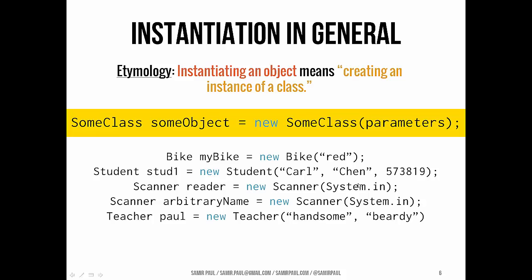This is the same example as we have in the Convert program. Hey, I want to make a new Scanner object. It's going to use the keyboard, and I want to refer to it as reader. Now, it doesn't have to be named reader. So hey, I can make a new Scanner object. It's going to use the keyboard, and I could call it arbitrary name. I could make a variable that refers to that object, and that variable is called arbitrary name. Likewise, I could say, hey, make me a new Teacher object. This teacher has, he's handsome, he's beardy, and I want to refer to him as Paul.